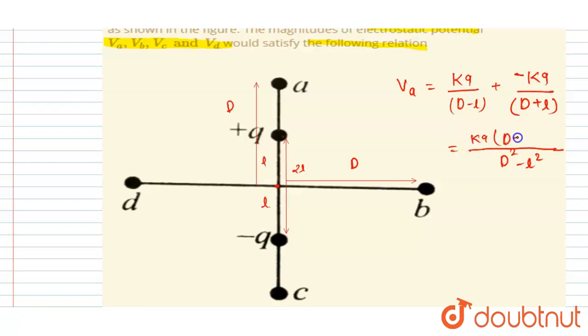So you can solve it: d plus l minus d minus d plus l, so it will be 2l. So this will be the potential at a. Very simple.